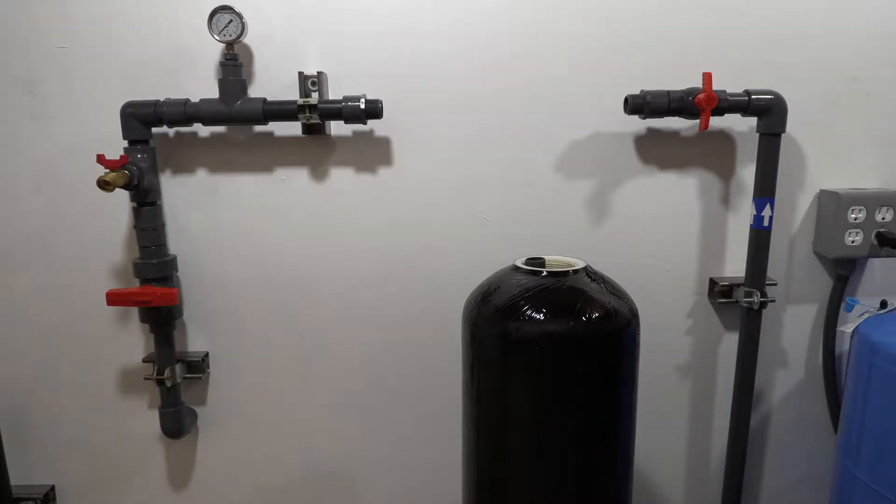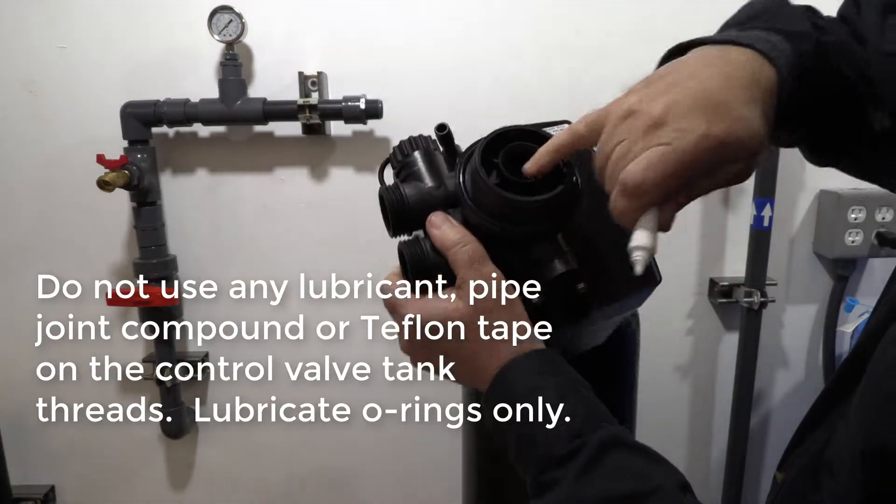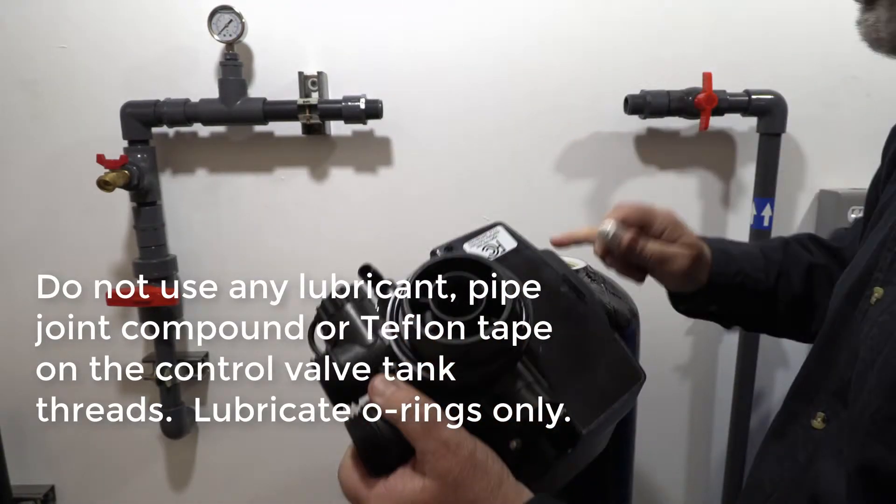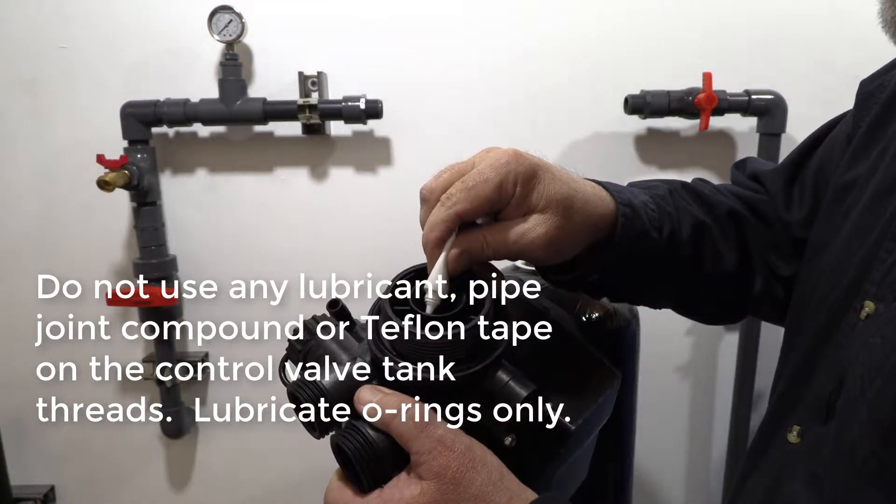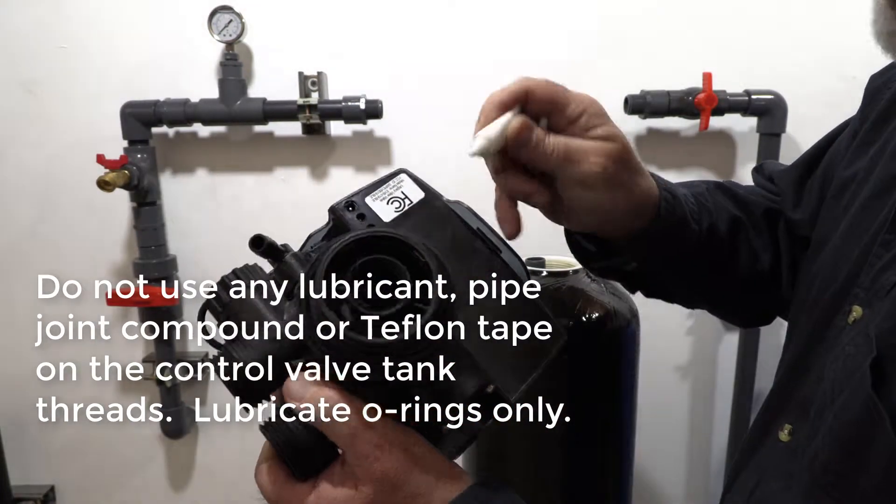To install our control valve, there are two o-rings: one on the inside that seats the D-tube and one on the outside that seats to the cylinder. Take some of the lube that we provided and put a little dab on the o-rings.